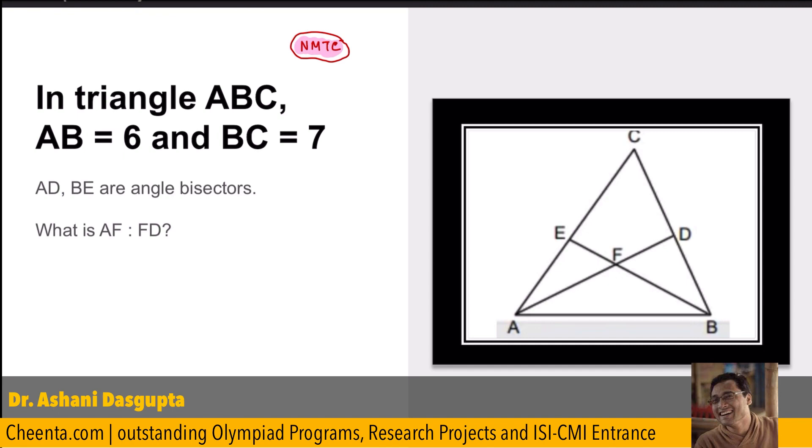It is also given that CA is 8. I think one piece of information is missing here. CA is 8. This is 7. And AB is 6.